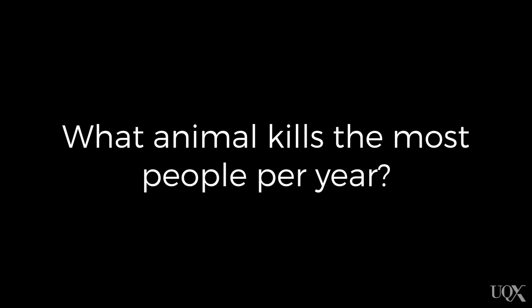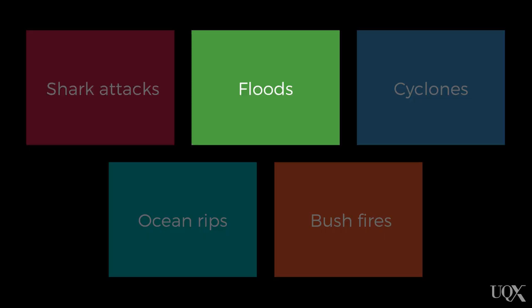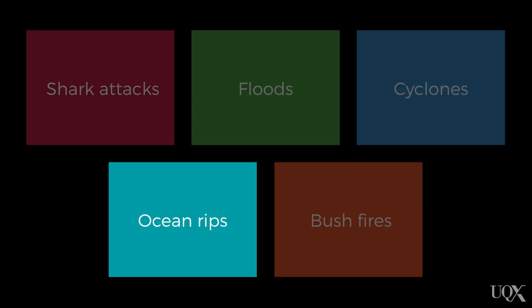Next, what animal kills the most people per year in the world? Check the options in the activity and select one of those animals. Finally, what causes the largest number of deaths per year in Australia? Is it shark attacks, floods, cyclones, ocean rips, or bushfires? Make sure you record your answers in the activity that follows.